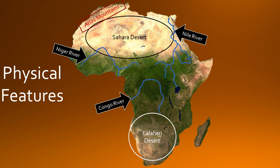This is the Congo River. It is located in Central Africa in the Democratic Republic of the Congo and it is the second longest river in Africa.